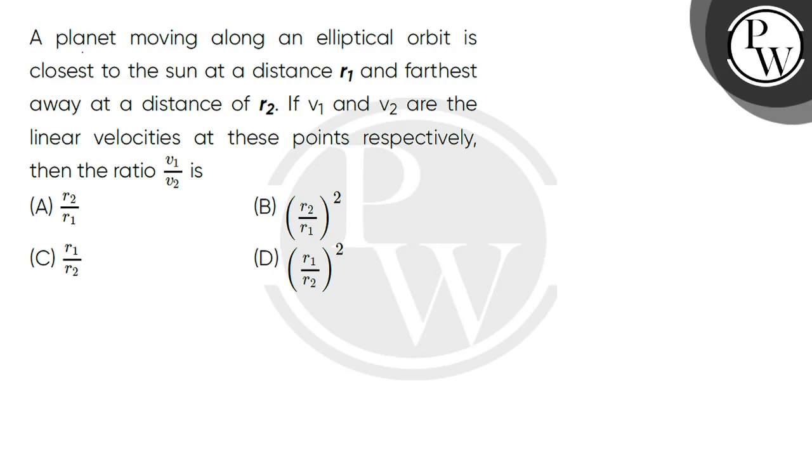Let's read the question. A planet moving along an elliptical orbit is closest to the sun at a distance r1 and farthest away at a distance r2.